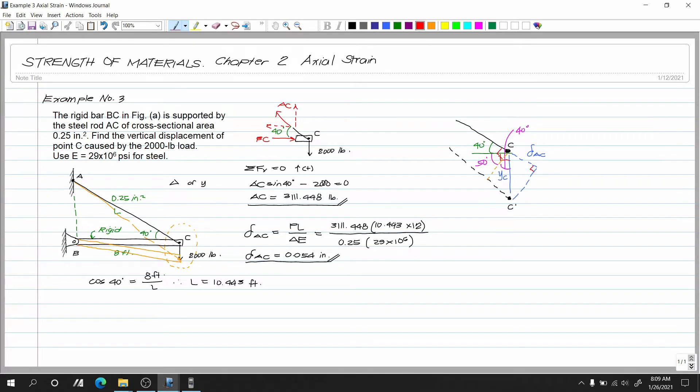Eh yung ating relationship rin dito. Itong brown na to tapos yung sa ating deformation na AC ito rin is 90 degrees. Tama ba? Kung 90 degrees to 90 minus 40 this is also equals to 50 degrees. So 90 minus 40 ito nyan is 40 degrees. Ayan. Ayusin natin yung triangle natin. So ito nyan is yung deformation AC ito yung ating displacement YC. Tapos ito yung ating 40 degrees. Ayan.